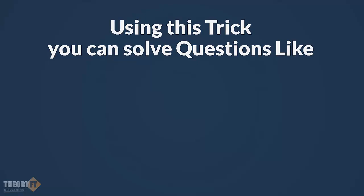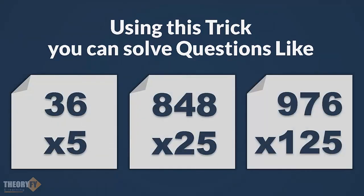Using this trick you can solve questions like these: 36 into 5, 848, 825, 976 into 125. In all these multiplications numbers are 5, 25, 125.